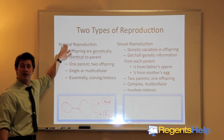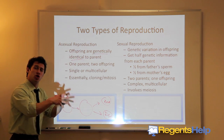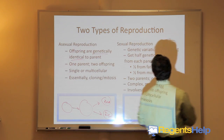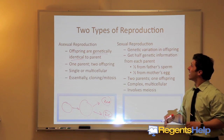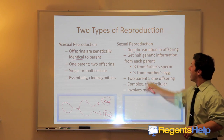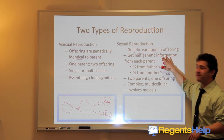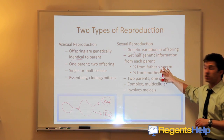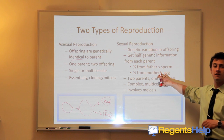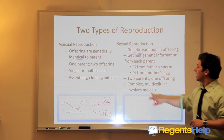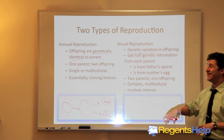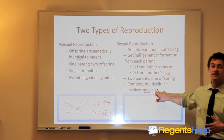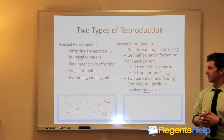The prefix 'a' means without sexual reproduction — without two different sex organs coming together. In sexual reproduction, this allows for genetic variation in offspring because the daughter cells get half of the genetic information from each parent: half from the father's sperm and half from the mother's egg. There are two parents and one offspring, and this typically occurs in complex multi-cellular organisms, involving the process of meiosis — the division of sex cells.